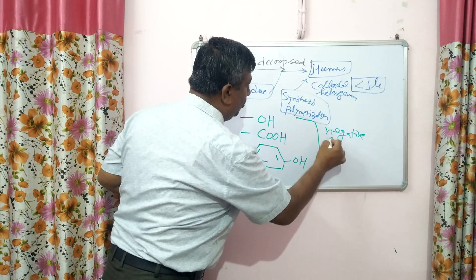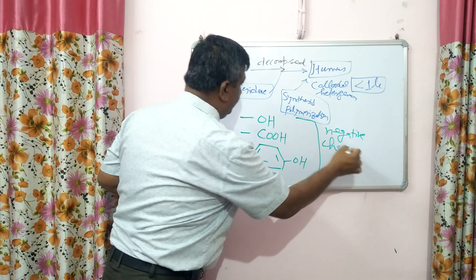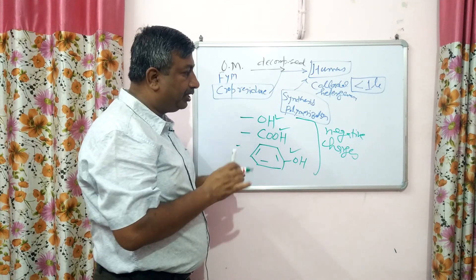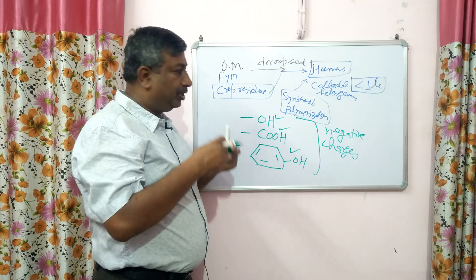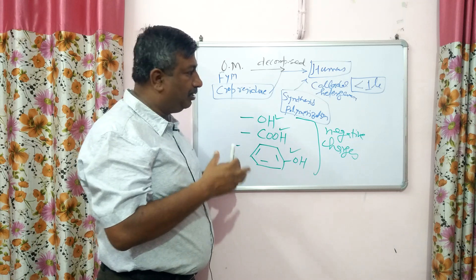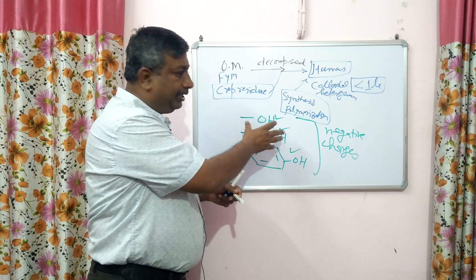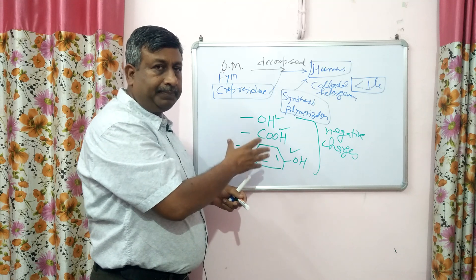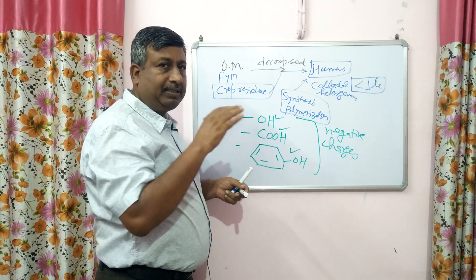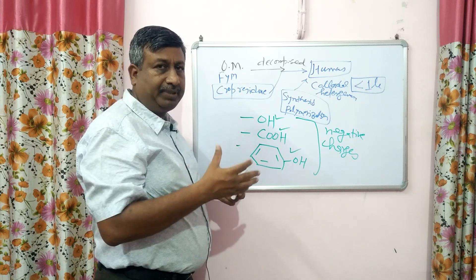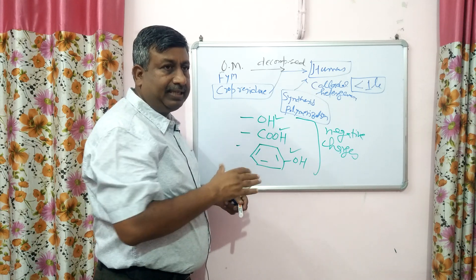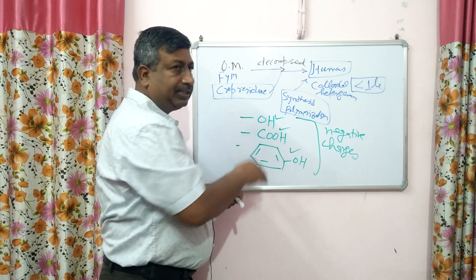The carboxylic group (COOH) and the phenolic group (benzene ring with OH) carry negative charges. These are responsible for the negative charge on the humus micelle or humus particle. These are pH-dependent charges, meaning as pH increases, the number of these charges increases. As pH decreases — under acidic conditions where pH is less than 7 — these charges decrease.